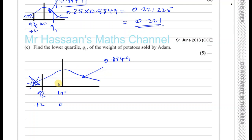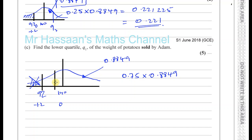We want to find the lower quartile of this region — the value of weight such that 25% of the weights of the potatoes sold by Adam are less than it. So we want the left 25% and the right 75% of this region. If we find 0.75 times 0.8849, that will give us the area to the left of Q1 from zero.